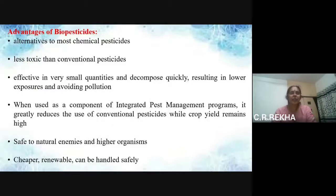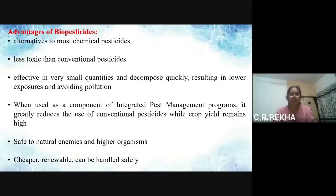So what are the advantages of biopesticides? Biopesticide is an alternative to chemical pesticides. It is less toxic. It is effective in very small quantities and decomposes quickly, resulting in lower exposures and avoiding pollution. When used as a component of integrated pest management programs, it greatly reduces the use of conventional pesticides while crop yield remains high. It is safe to natural enemies and higher organisms. It is cheaper, renewable, and can be handled safely.